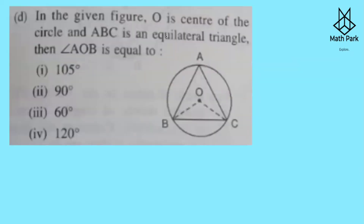Question 4: O is the center and ABC is an equilateral triangle inscribed in the circle. We need to find angle AOB. Each angle of an equilateral triangle is 60 degrees. By the property that the angle subtended by an arc at the center is double the angle subtended on the remaining part of the circle, angle AOB = 2 × 60 = 120 degrees.